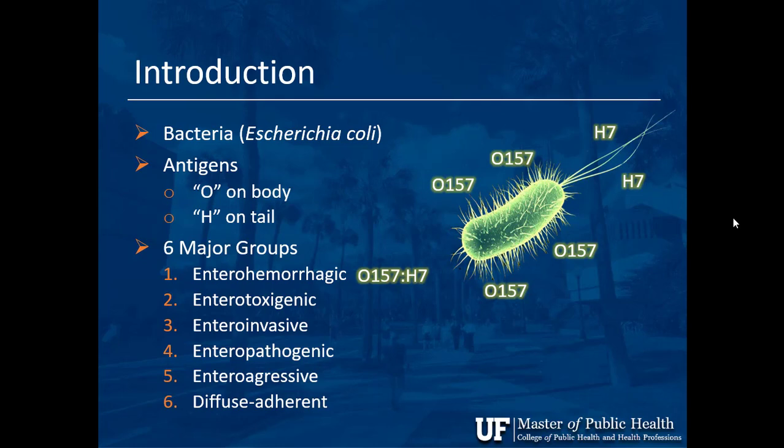So O157 — remember O is the antigen marking the body. Antigens are like a name tag; if you wore one you'd say hello, my name is John. The name tag on this one is number 157, and on the tail it's H7.